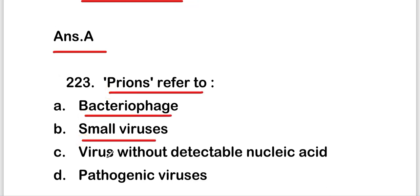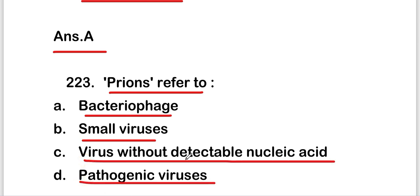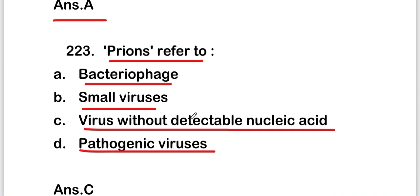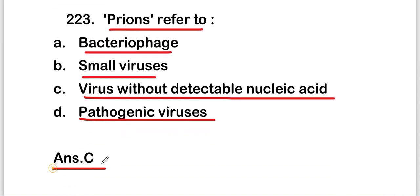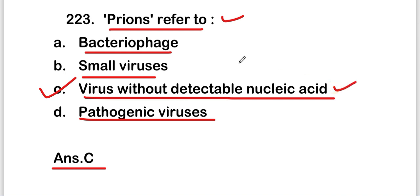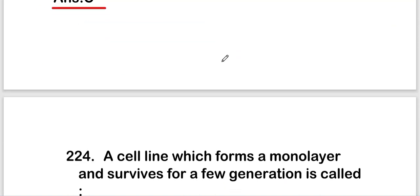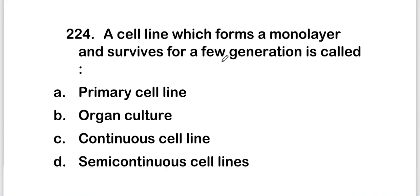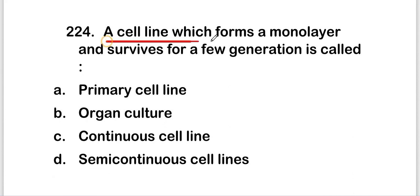The next question: prions refer to — bacteriophages, small viruses, virus without detectable nucleic acid, or pathogenic viruses? The right answer is option C — virus without detectable nucleic acid. Prions refer to virus without detectable nucleic acid.